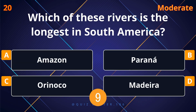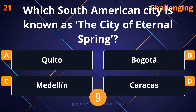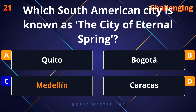Which of these rivers is the longest in South America? Amazon. Which South American city is known as the city of eternal spring? Medellín.